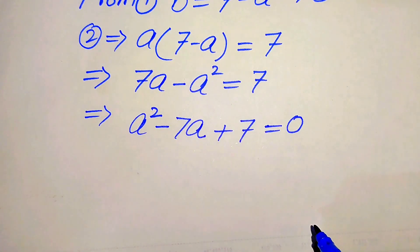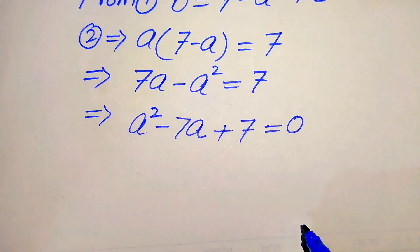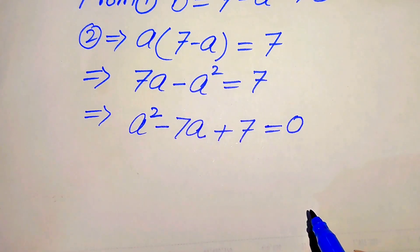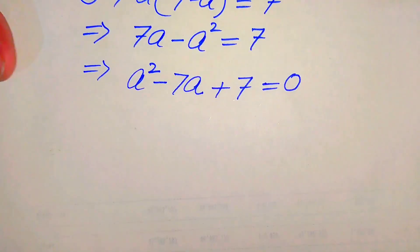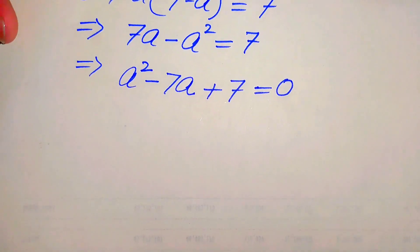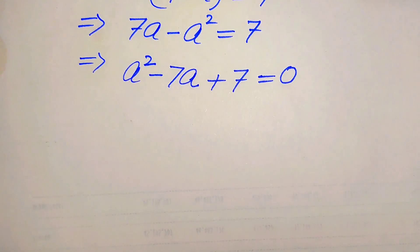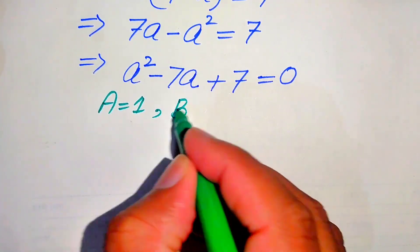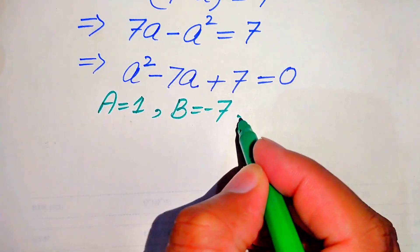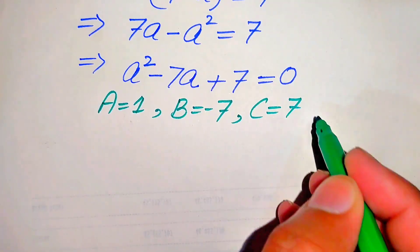This equation is quadratic in A. There are three methods to solve it: factorization, completing the square, and the quadratic formula. We apply the quadratic formula. The coefficients are capital A equals 1, capital B equals minus 7, and capital C equals plus 7.